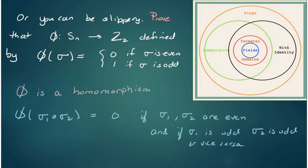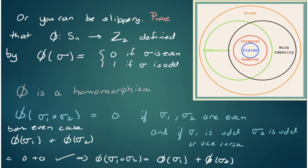Phi is a homomorphism. You can prove this. And I intend to ask something like this on the exam. There are very simple proofs. But phi of sigma 1 composed with sigma 2 is 0 if sigma 1 and sigma 2 are even, or if sigma 1 is odd and sigma 2 is odd, and therefore phi of that sigma 1 composed sigma 2 will be 0.